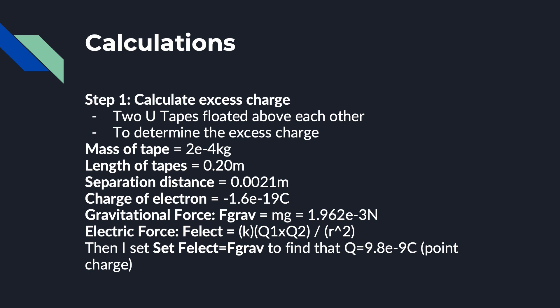The first thing we calculate in this lab is the excess charge. We will use the initial conditions as well as the charge of one electron, which is negative 1.6 times 10 to the negative 19 coulombs. The gravitational force in this case is 1.962 times 10 to the negative 3 newtons, and the electric force is k times q1 times q2, all divided by r squared. Setting the electric force equal to the gravitational force, we find that q equals 9.8 times 10 to the negative 9 coulombs.